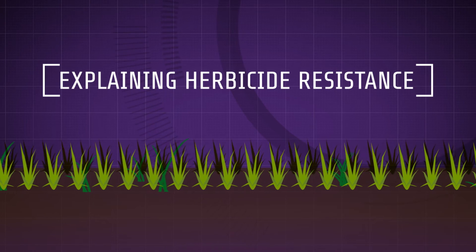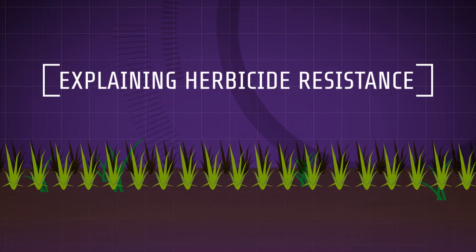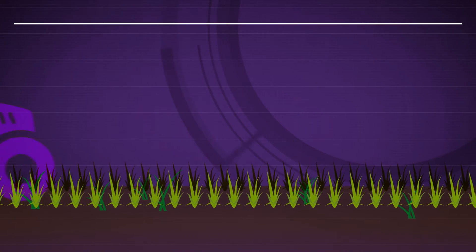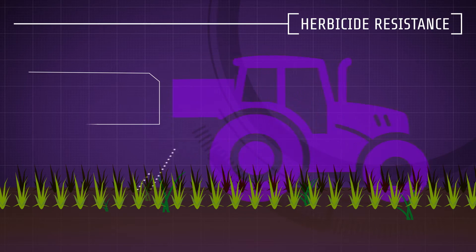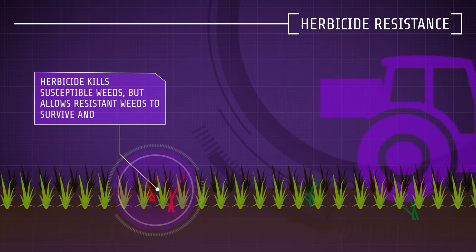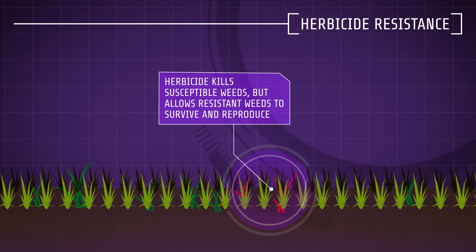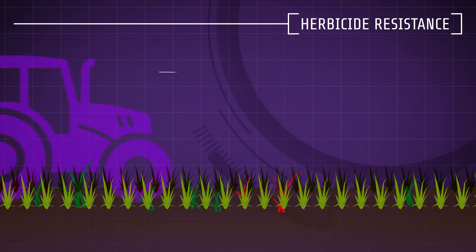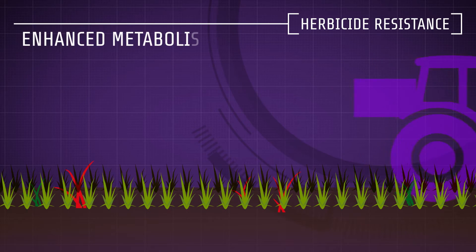Explaining herbicide resistance. Herbicides work by disrupting a particular plant process or function. Once a weed population is exposed to a herbicide to which one or more plants are naturally resistant, the herbicide kills susceptible individuals but allows resistant individuals to survive and reproduce. This can occur as a result of target site resistance or enhanced metabolism.